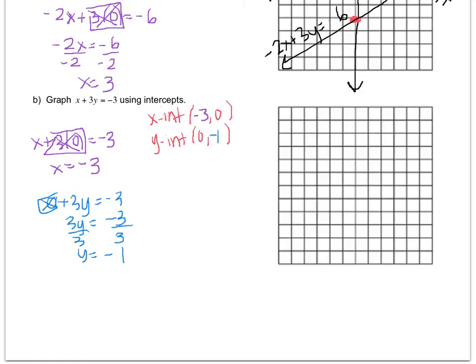So now I can plot. And I'm going to plot negative 3, 0. And I'm going to plot 0, negative 1. That's all I need. And now I can make the line and write the equation.